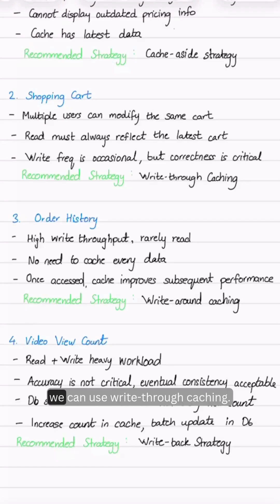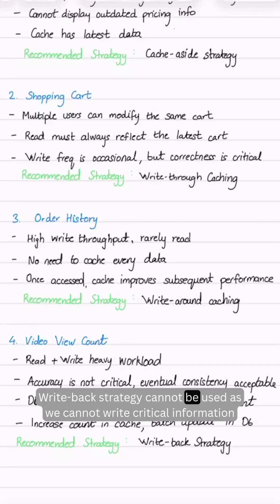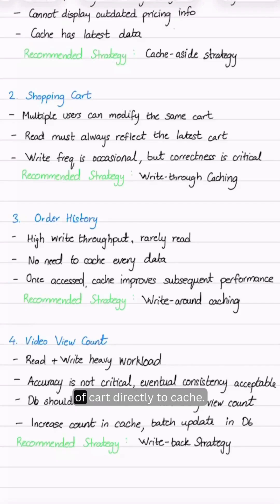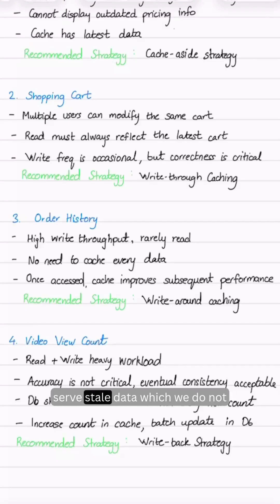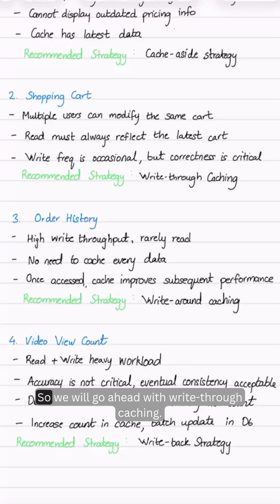In this case, we can use write-through caching. Write-back strategy cannot be used as we cannot write critical cart information directly to cache. It has a read-after-write pattern, so we can skip write-around caching. And since cache-aside strategy can serve stale data — which we do not want as correctness is important — we cannot use that either. So we go ahead with write-through caching.